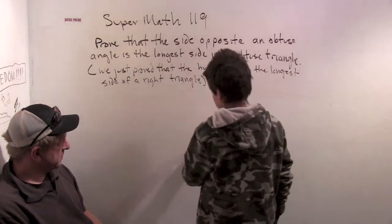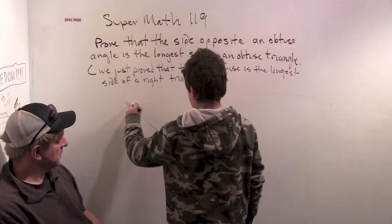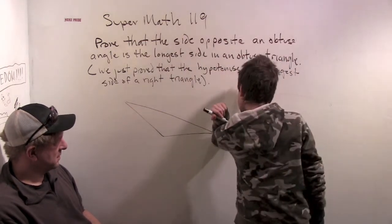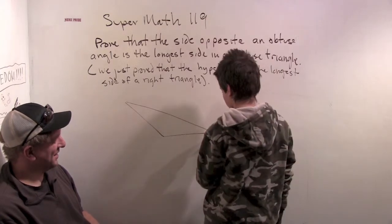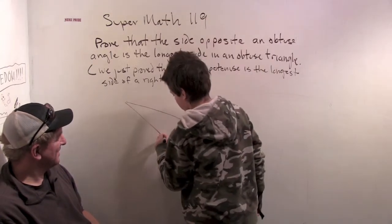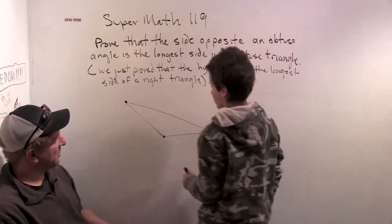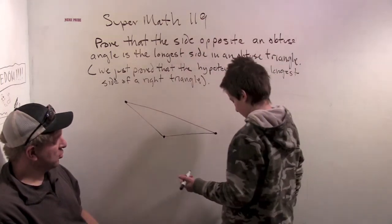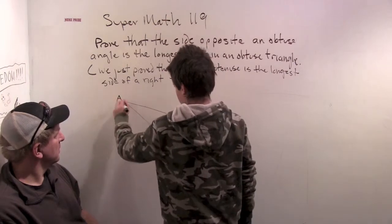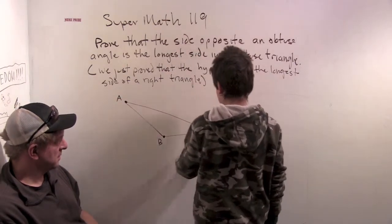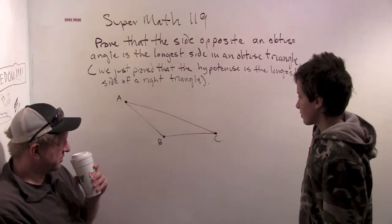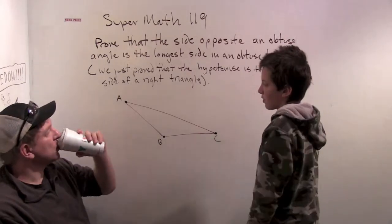Alright, so. The old elbow eraser. Okay, so there's our obtuse triangle. We're trying to prove this is the longest side. Just for, this might make it easier, we'll just prove it, let's make it A, B, C. Okay, label it A, B, C. That's always a good idea to label your diagrams.